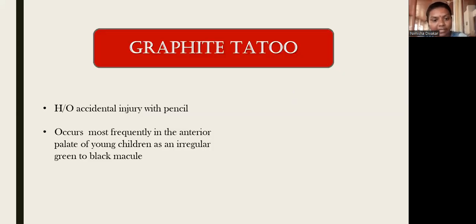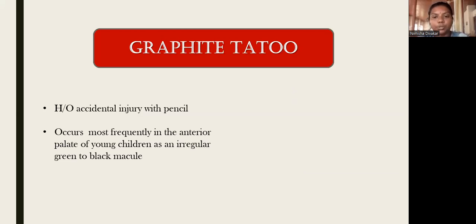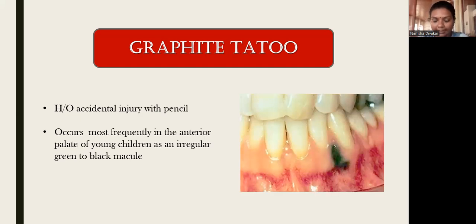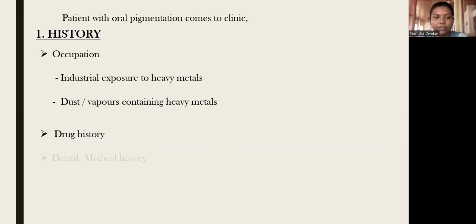The next entity is graphite tattoo, which is due to accidental injury with a pencil. It is more commonly seen in children, occurring in the anterior palate and alveolar region as an irregular green-to-black macule, caused when a pencil accidentally pricks the gingival or mucosal tissue. It can be seen as a bluish-green or black macule in the anterior palate.